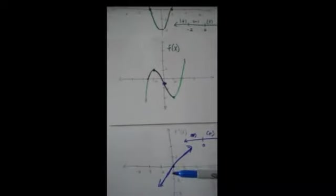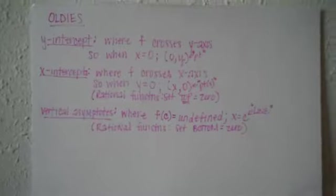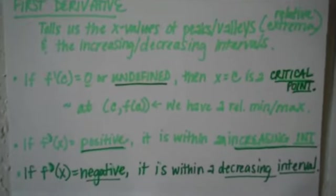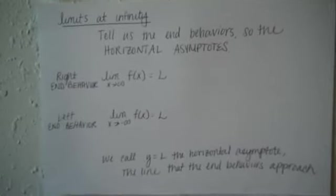So: original function, first derivative, second derivative. The first derivative has everything to do with critical points and increasing/decreasing intervals. The second derivative has everything to do with the inflection point and concave up versus concave down. The last thing is the limits at infinity, which relates to horizontal asymptotes. To summarize everything we have to consider: intercepts and vertical asymptotes from the oldies; the first derivative for critical points and relative extrema; the second derivative for concavity and inflection points; and horizontal asymptotes from limits at infinity.